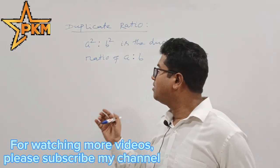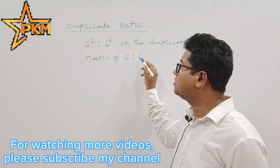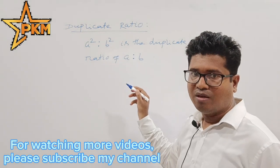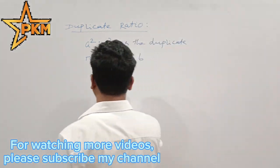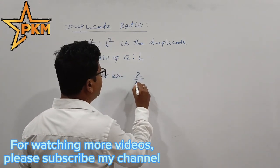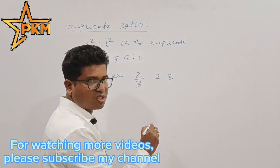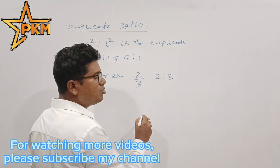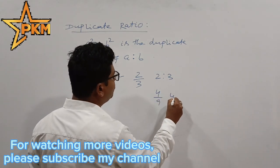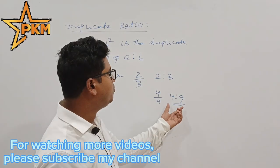For example, if a by b is a ratio, then the duplicate ratio is a square is to b square. For example, if we have a ratio 2 to 3, the duplicate ratio is 4 divided by 9. So the duplicate ratio of 2 by 3 is 4 to 9.